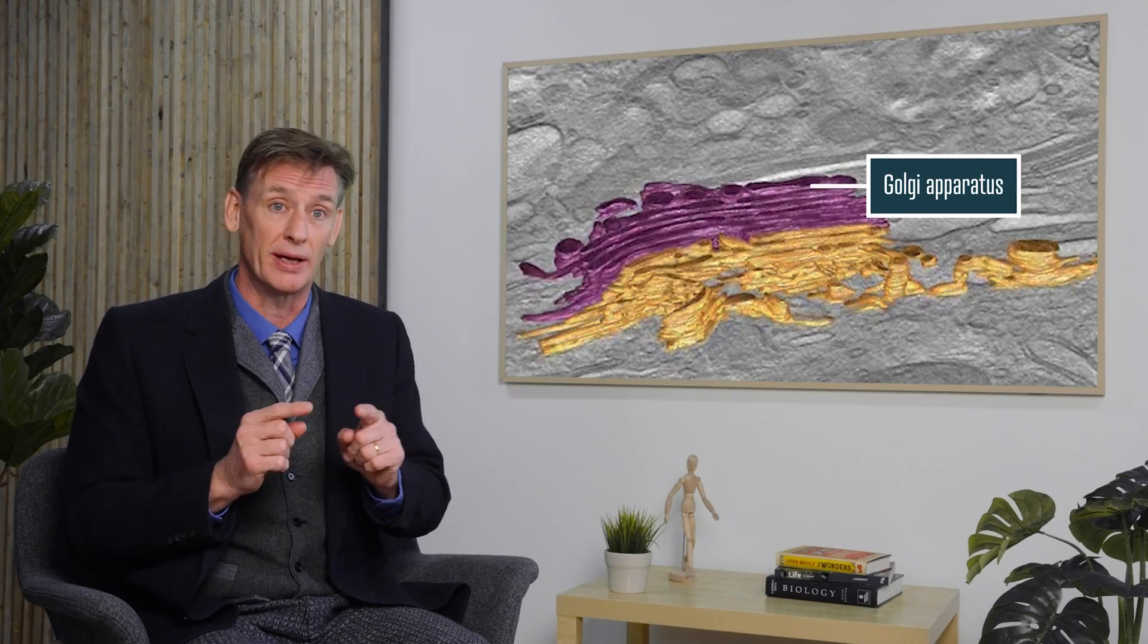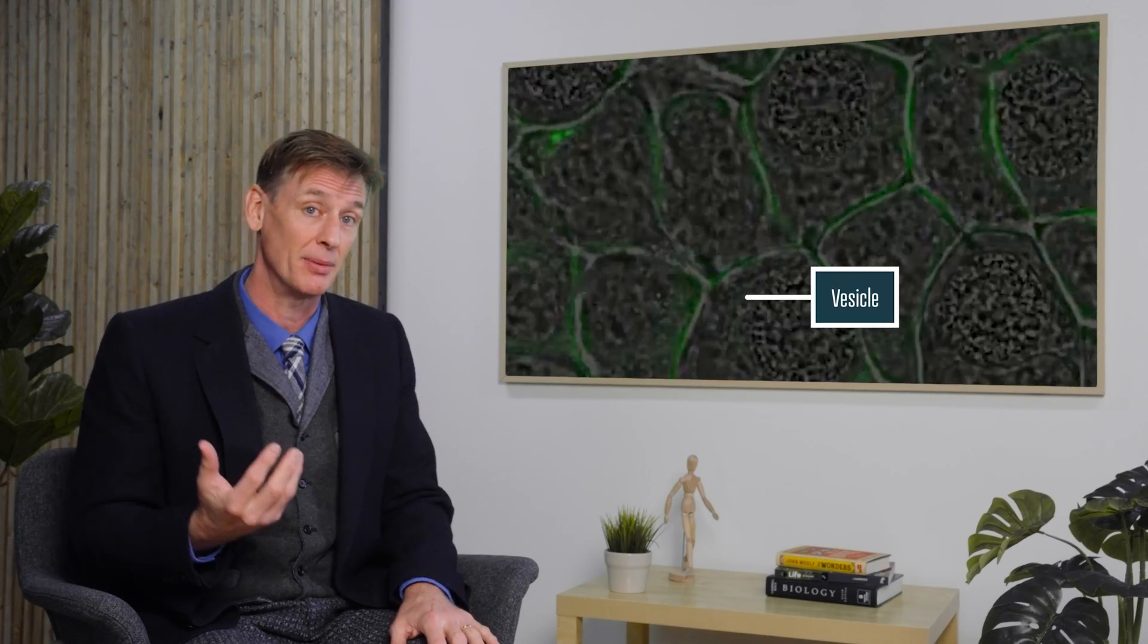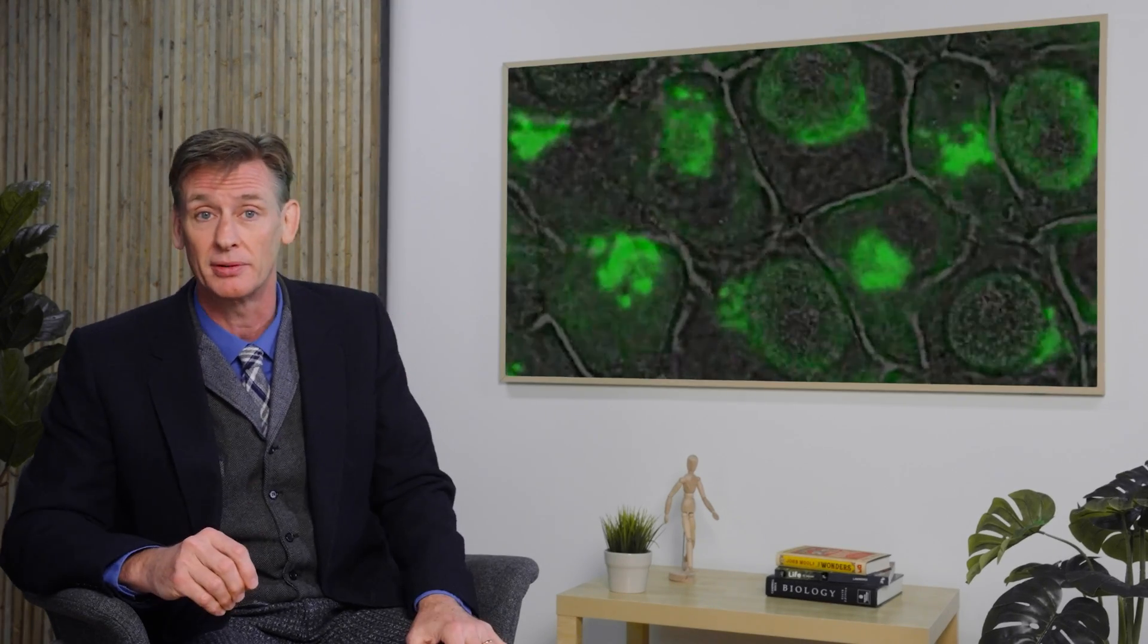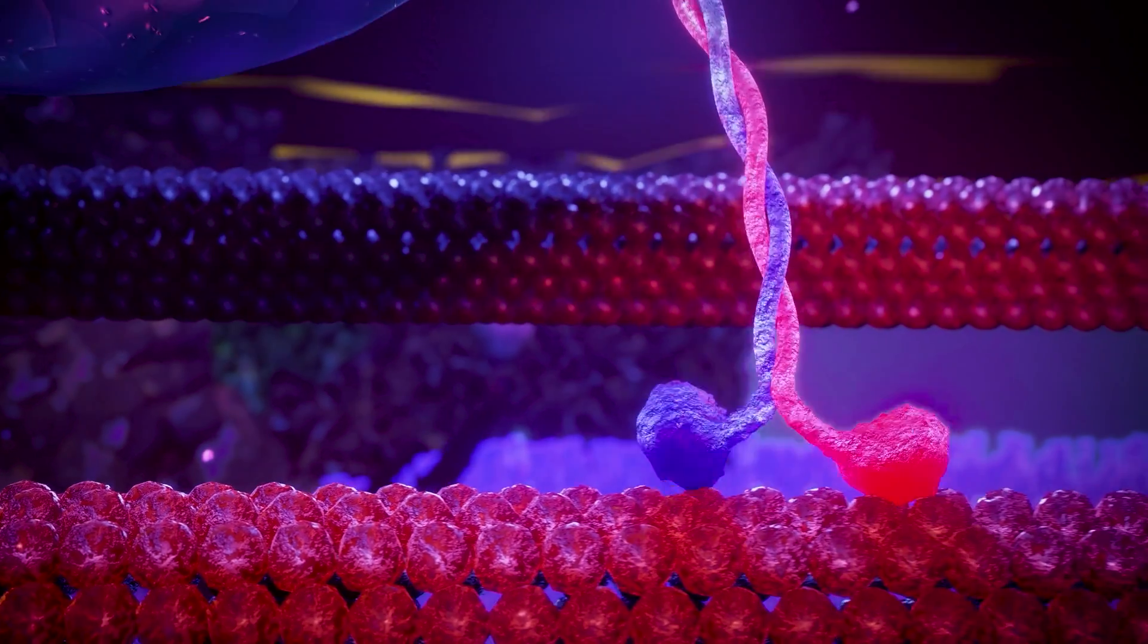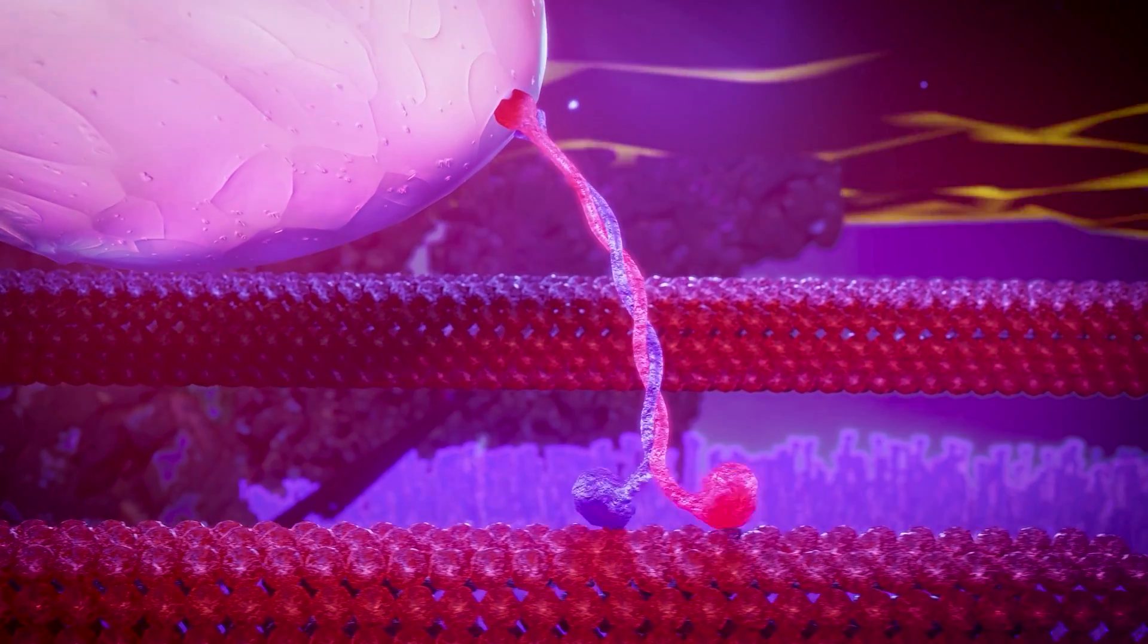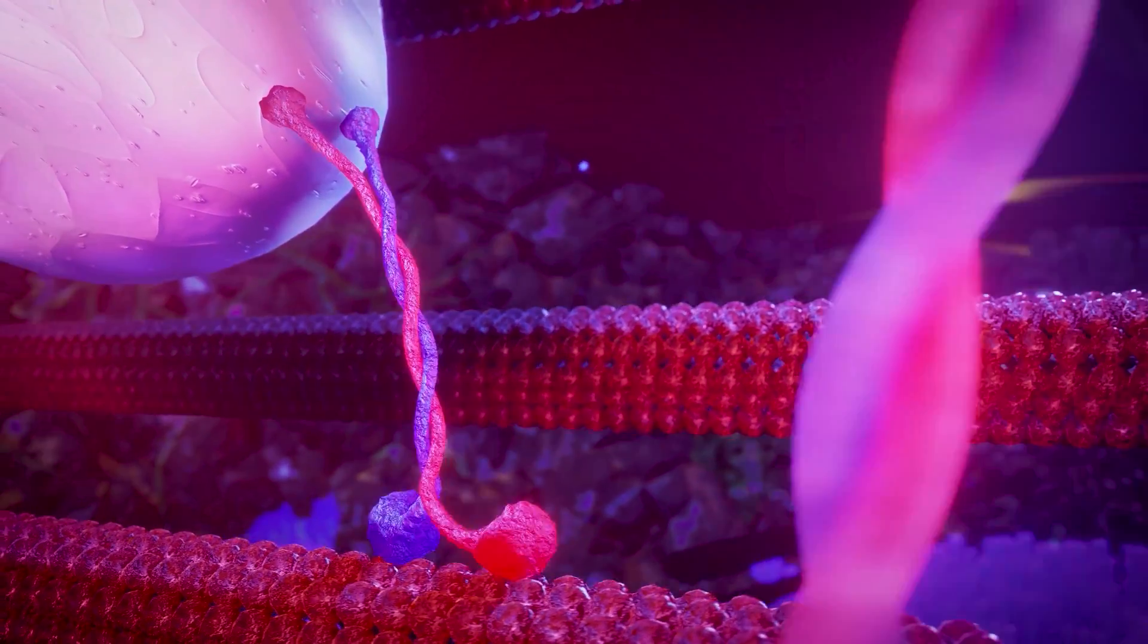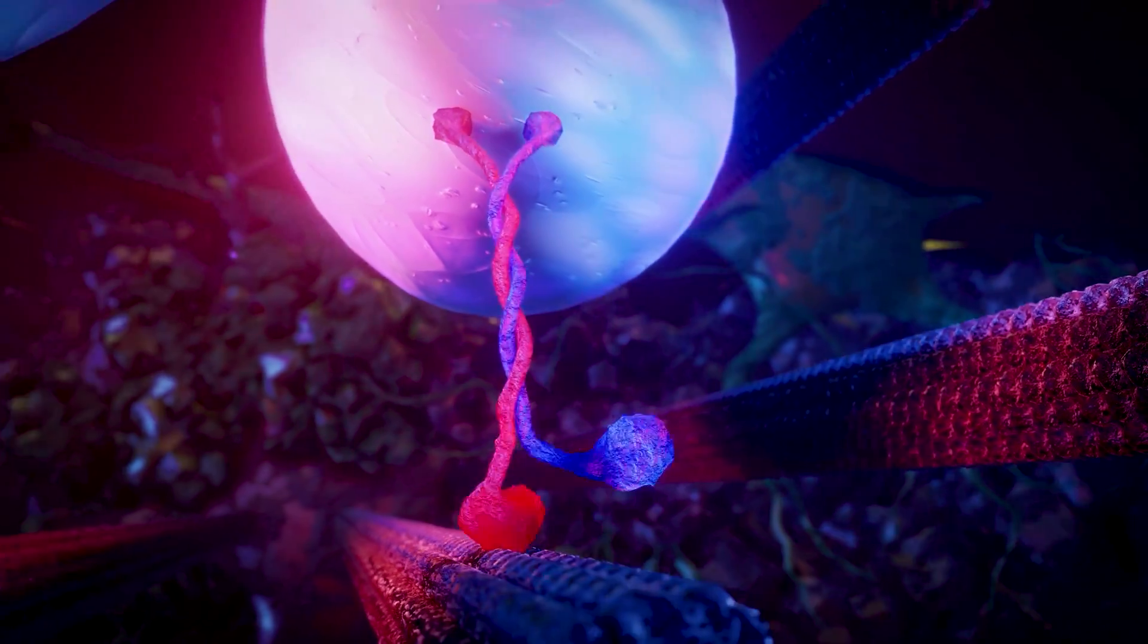Afterwards, another organelle in the cell called the Golgi apparatus packages the needed part and wraps it in a bag called a vesicle, then imprints the address where the part is to be delivered onto the parcel. Then, a kinesin is summoned, and as mentioned, a typical kinesin has two arms on one end holding the cargo, the vesicle, and two legs on the other end that walk along the roadway called a microtubule. So it picks up the parcel and walks along microtubules in the cell and delivers the parcel where it's needed.